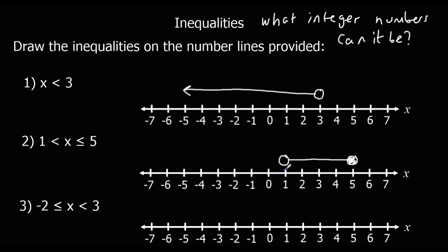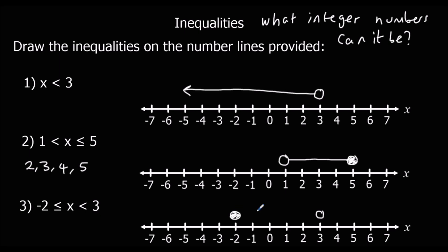So what integer numbers can it be for number 2? It can't be 1, but it can be 2, 3, 4, or 5. For number 3, x is bigger or equal to minus 2 and less than 3, so we colour in the minus 2 because it can equal that, and we join them up for a line.